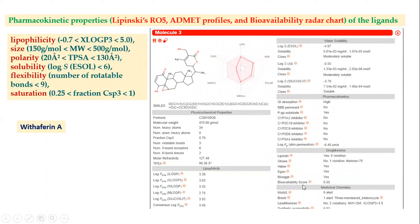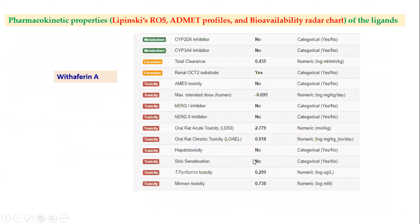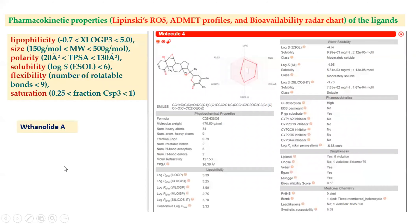Similarly, Withaferin A has a bioavailability score of 0.55 and can be orally administered. All values are within the pink region, with no toxicity, hepatotoxicity, or skin sensitization, and it was negative for Ames toxicity. For Withanolide A—which showed the lowest binding energy, indicating very stable protein-ligand interaction—the bioavailability score is also 0.55, meaning it is orally bioavailable.